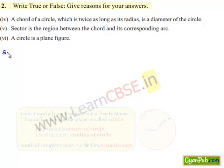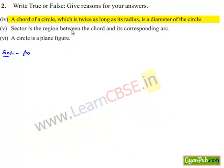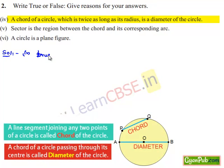Moving on to the solution for the fourth bit: a chord of the circle which is twice as long as the radius is called the diameter of the circle — that is true, because we know that a chord passing through the center of the circle will have a length equal to two times the radius. Therefore, that chord is the diameter of the circle.